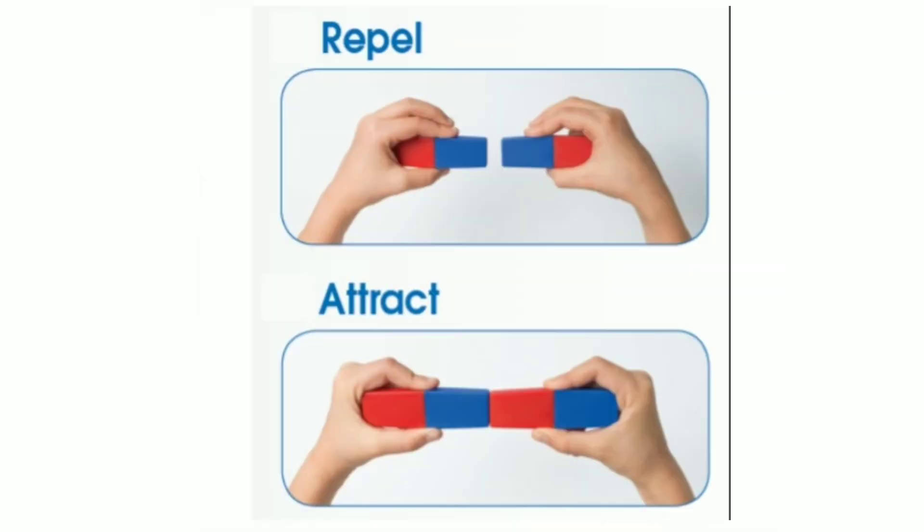The north pole will only attract the south pole. And the south pole will only attract the north pole. But one north pole and another north pole are enemies. While south pole and south pole are also enemies.